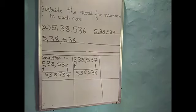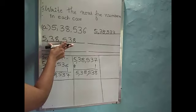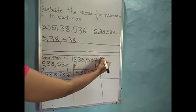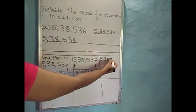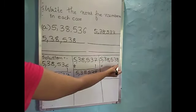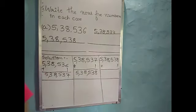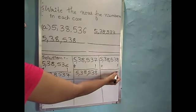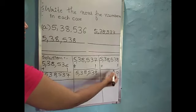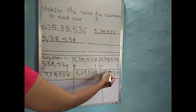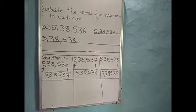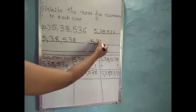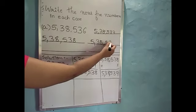Next we have to find out the next number. We should add 1 to this number. So 5,38,538 plus 1: 8 plus 1 is 9. Write 3 as it is, then 5, then 8, then 3, then 5. So the next number is 5,38,539.